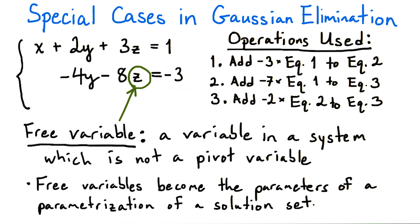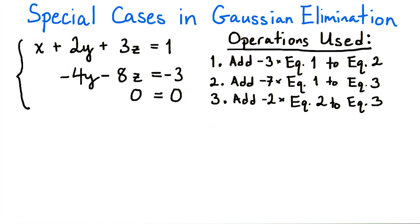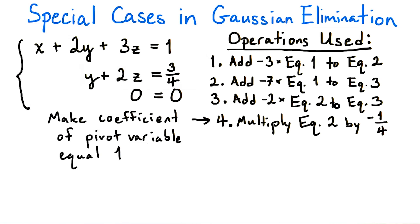Now let's continue our Gaussian elimination algorithm so we can end up with the parameterization of the solution set of our system. In the second equation, in order to make the pivot variable have a coefficient equal 1, multiply through by negative 1 fourth. The equation now reads y plus 2z equals 3 fourths.